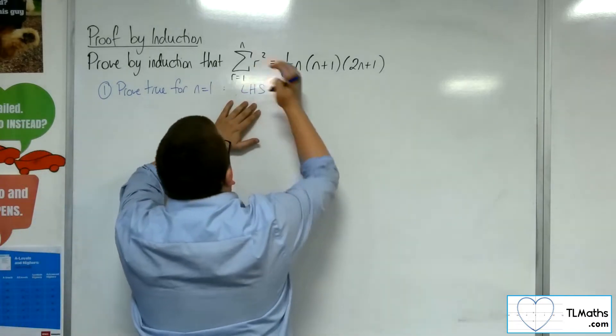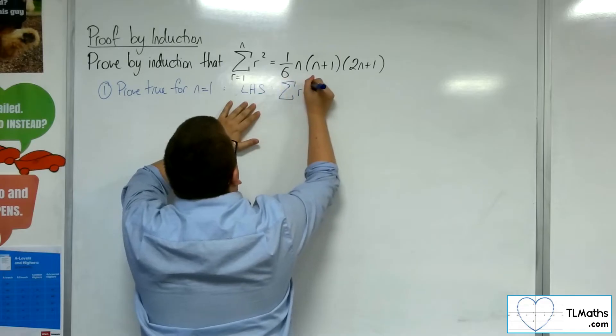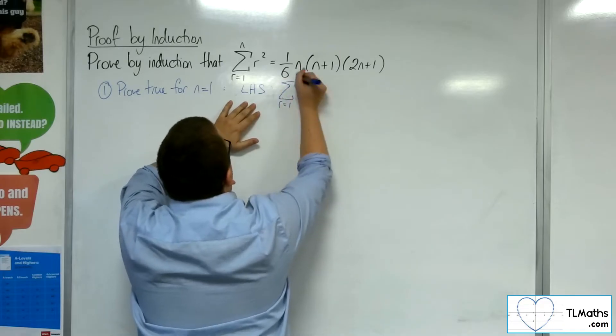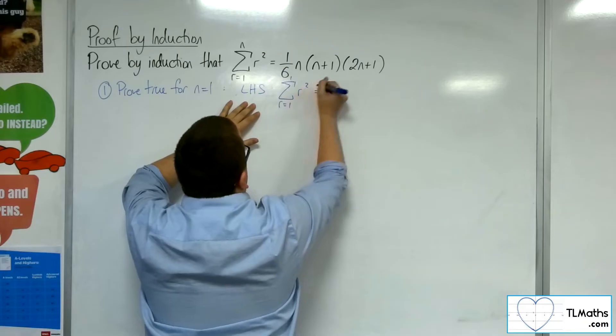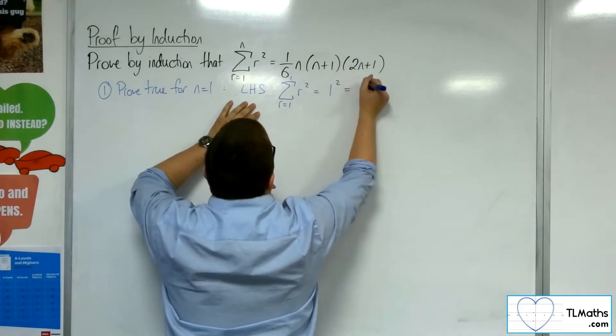Look at the left-hand side, I've got this summation of r squared from r is 1 and n is now 1. So, this is just substituting in 1. So, I get 1 squared and so I get 1.